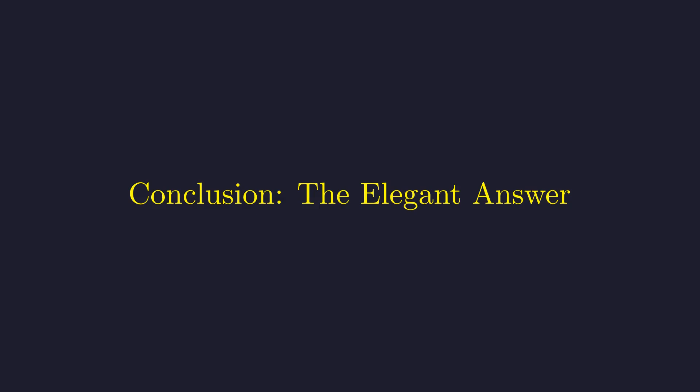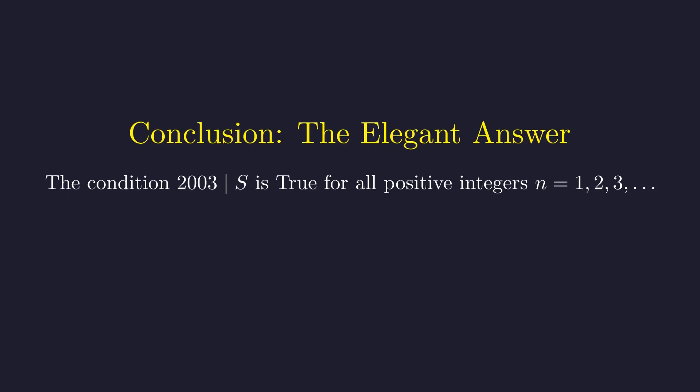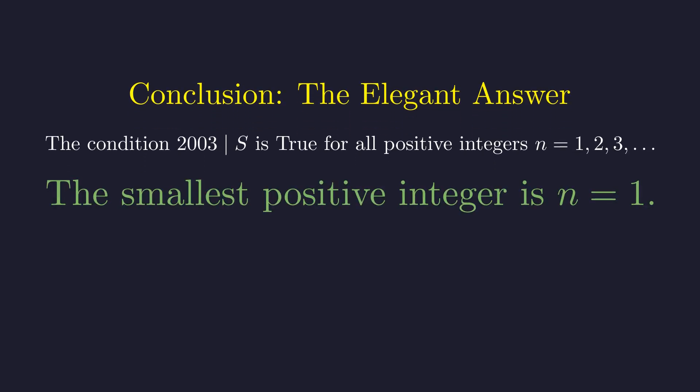Let's now answer our original question with this powerful insight. We've proven that 2003 divides our sum for every positive integer n. This is an unexpected and beautiful result. Since all positive integers work, the smallest one is simply 1.